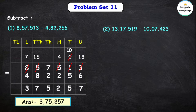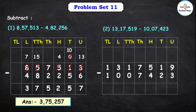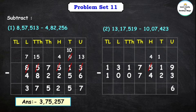Question number 2: 13,17,519 minus 10,7,423. Let us subtract the unit place: 9 minus 3 is equal to 6. Now let us subtract the tens place. We have to subtract 2 from 1, but 1 is smaller than 2. So let's borrow 1 from the hundreds place, which has 5. After borrowing, the hundreds place becomes 4, and the tens place becomes 11. We can easily subtract 2 from 11. 11 minus 2 is equal to 9.